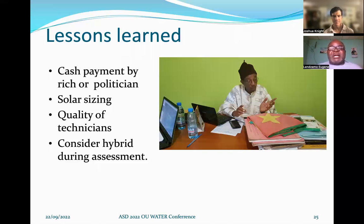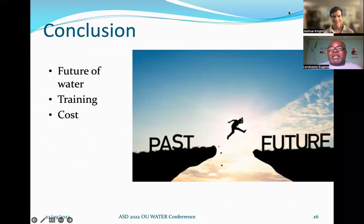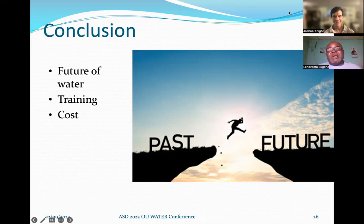Moving forward, we will consider introducing a hybrid system in our assessments, so that in the future, if grid power reaches the community, they can easily switch to grid, and they can also use generators during periods when cloud cover is heavy. As a conclusion, the future of water in rural communities — particularly in off-grid areas — will depend on solar. This is the only available energy that can reach those areas cheaply and power their water systems. This will be possible with better-trained technicians and as the cost of equipment drops, making it an increasingly relevant technology for rural communities.